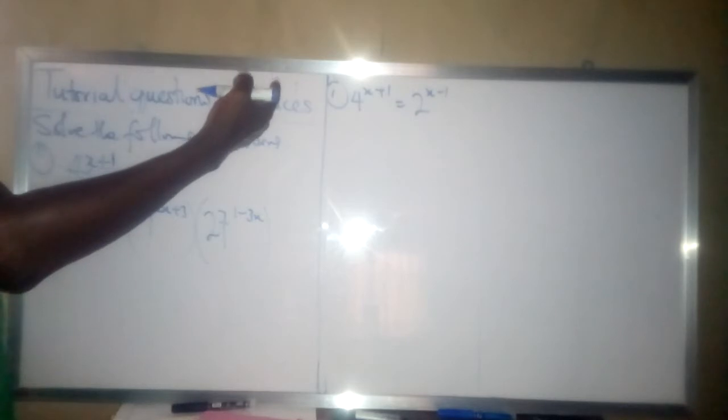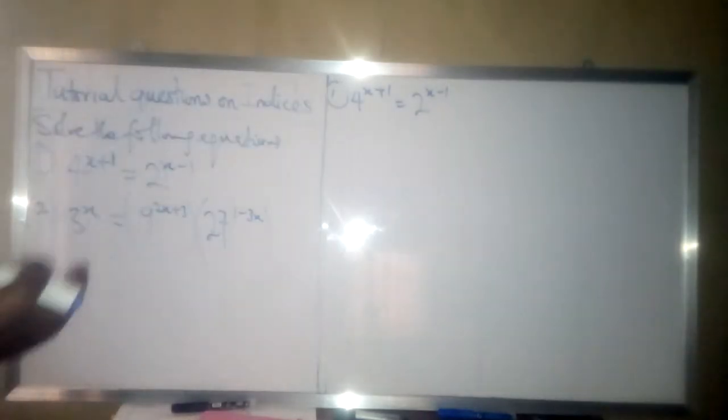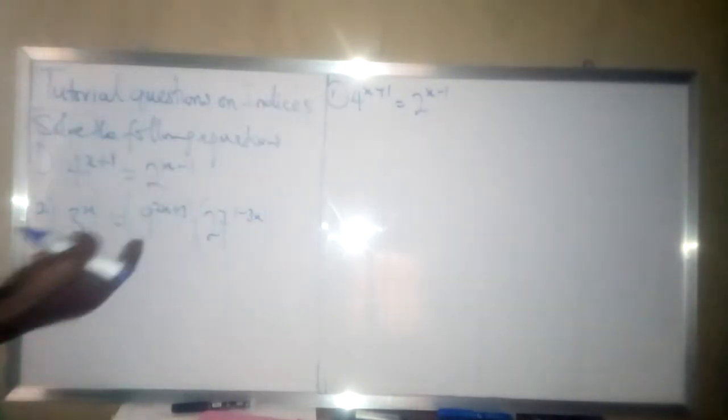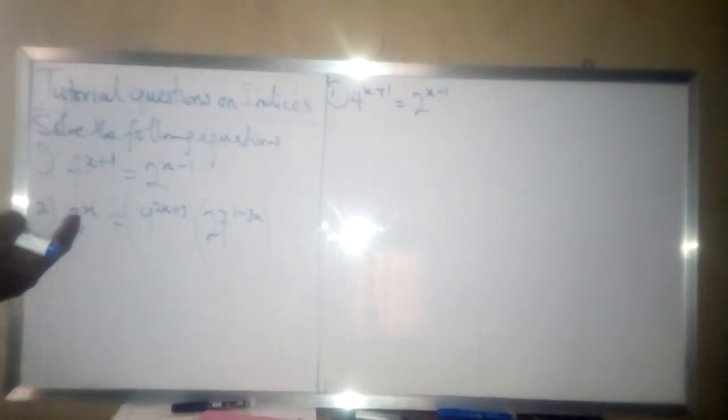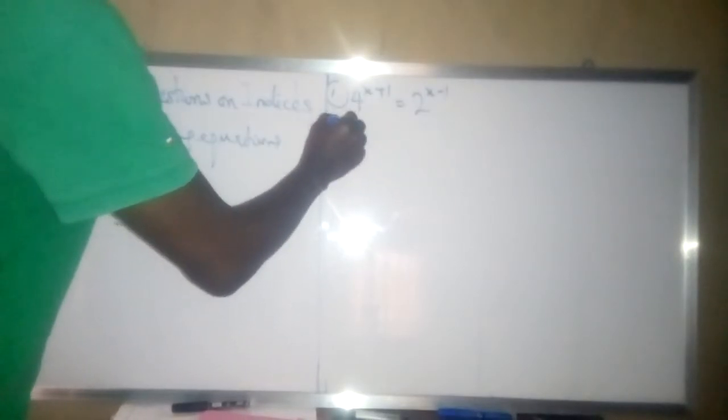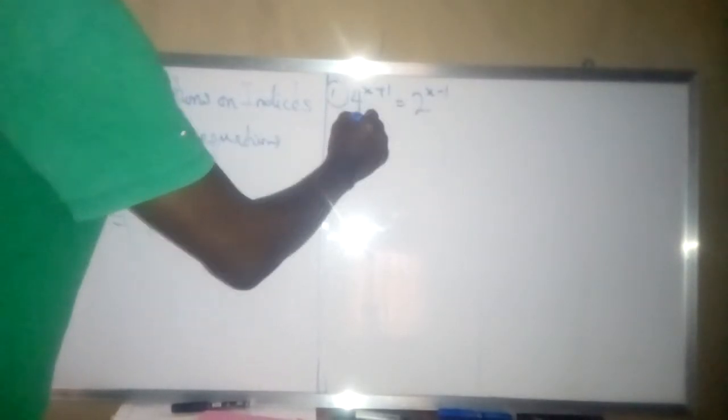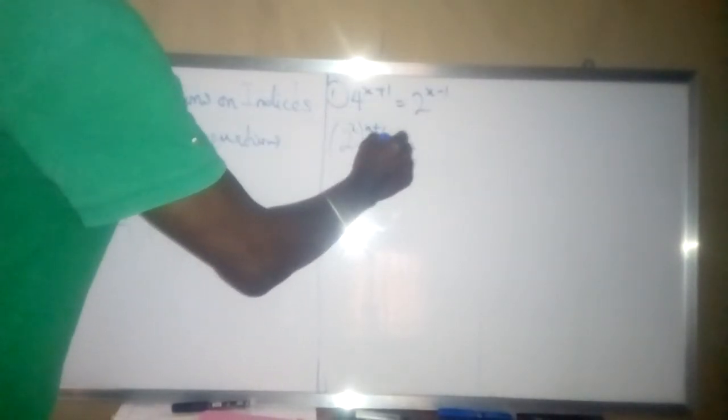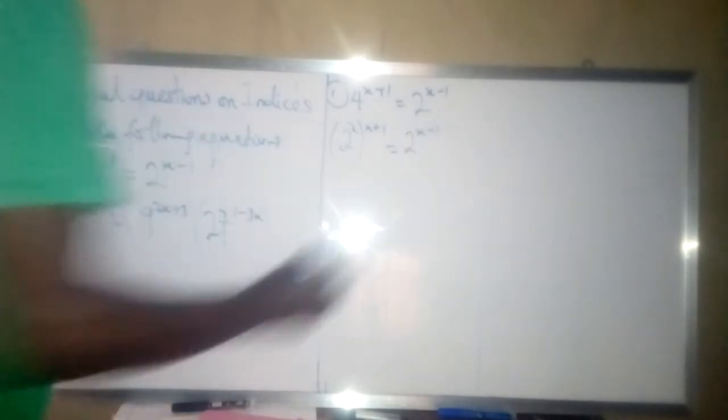Now the first one: 4 raised to power x plus 1 is equal to 2 raised to power x minus 1. If you look at the left and right side of the equation, you observe that we have a multiple of 2. 2 is common to the two of them. So we can write 4 in terms of multiple of 2 as 2 raised to power 2, which has replaced 4, into bracket x plus 1, then 2 raised to power x minus 1.